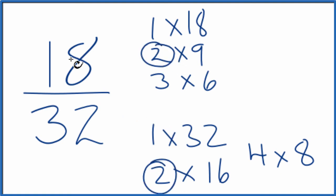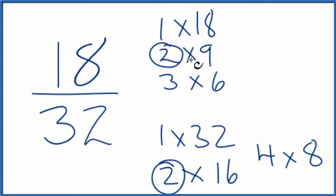So we're going to divide 18 by 2, 32 by 2, and then we'll have simplified 18 32nds.